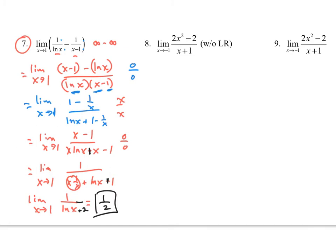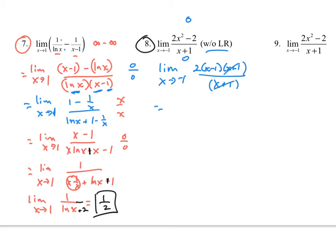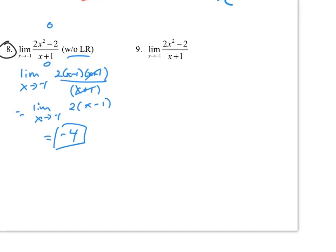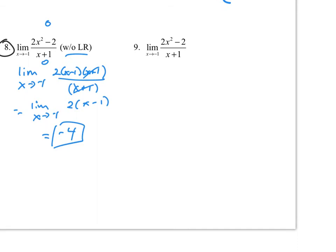You can graph these things too and check them, but a lot of times you want to do it analytically with L'Hopital's Rule. Number 8 says to do it without L'Hopital's Rule. As x approaches negative 1, plugging in gives 0 over 0, so we factor and cancel. The (x plus 1) factors cancel, leaving the limit as x approaches negative 1 of (x minus 1), which gives negative 4 by direct substitution. Number 9 says to try it with L'Hopital's Rule: taking derivatives gives 4x over 1, and direct substitution at negative 1 also gives negative 4.